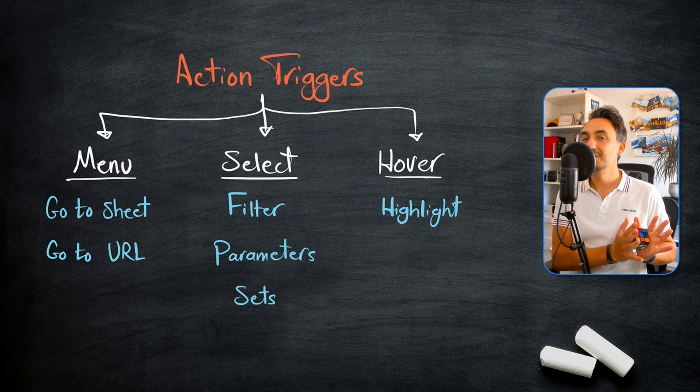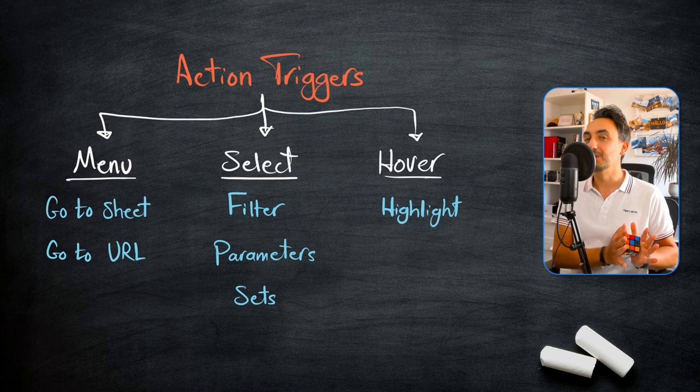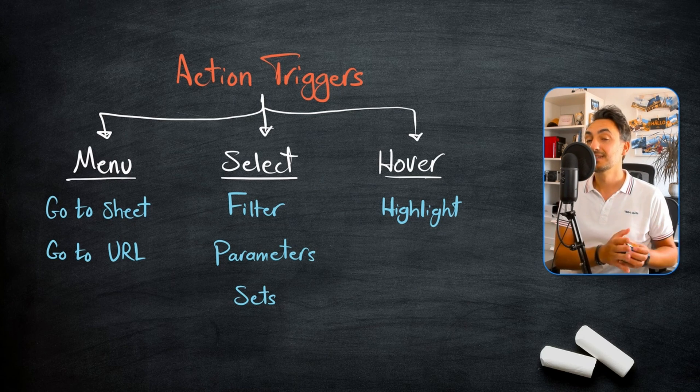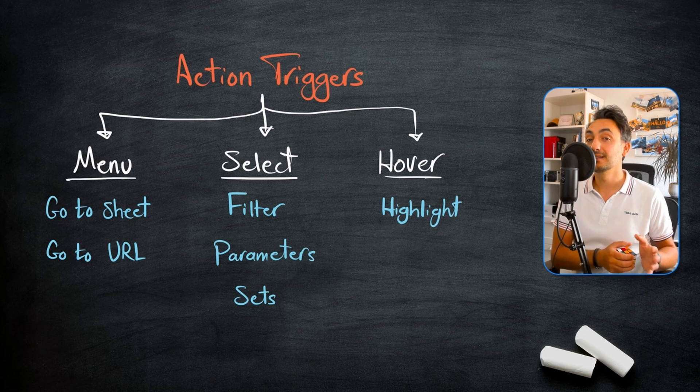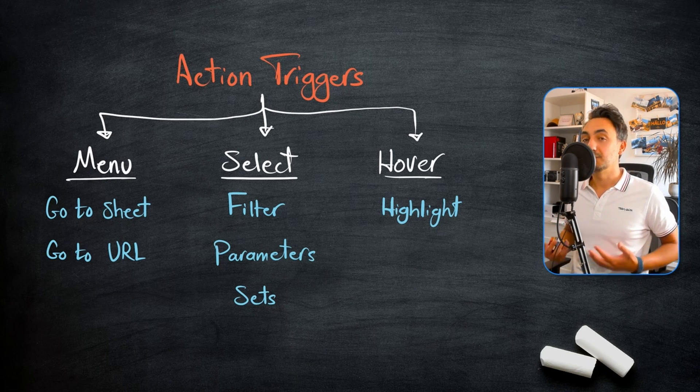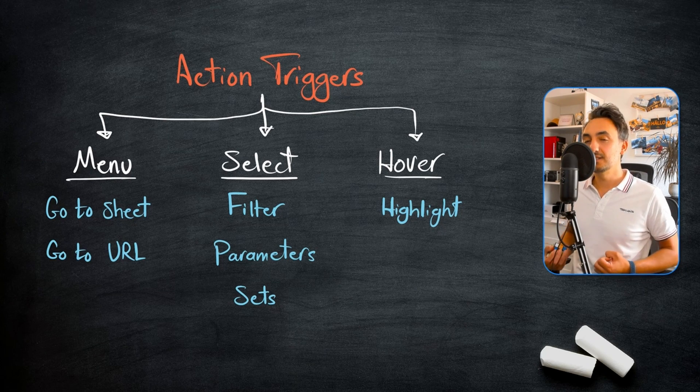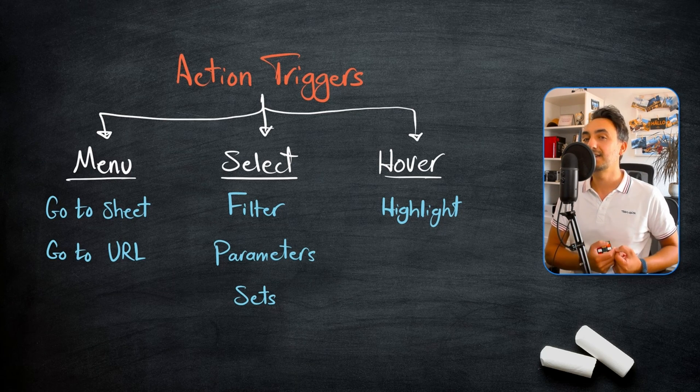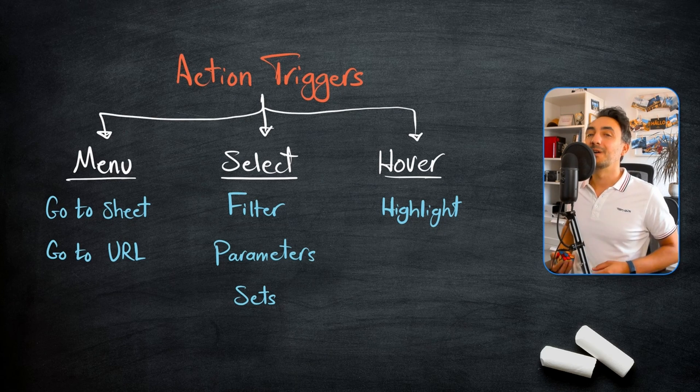Really be careful about when and how to trigger which actions. Don't surprise your users by jumping somewhere else if you are using go to URL and sheets. Be careful, talk with your users about it, how they would like to see it, and then maybe together make decisions about the interactivity and actions together with the users.